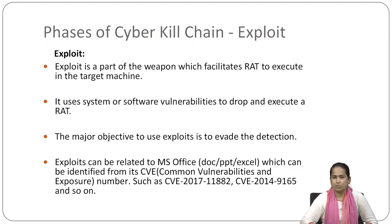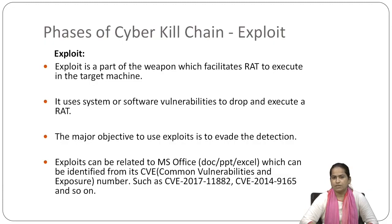The major objective of using exploits is to avoid detection. Exploits can be related to MS Office — files with extensions like .doc, .ppt, or .xls — which can be identified by their CVE (Common Vulnerabilities and Exposure) number. One CVE number identifies each exploit. Examples include CVE-2017-11882 and CVE-2014-9165.